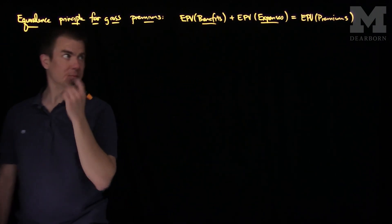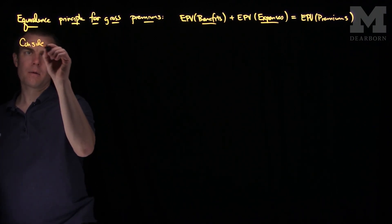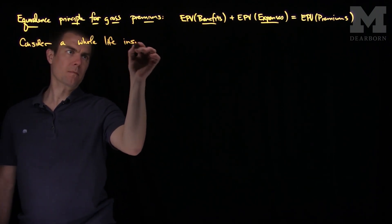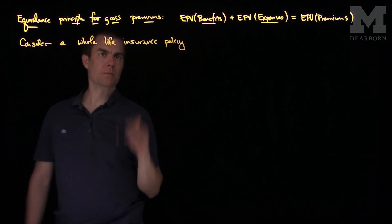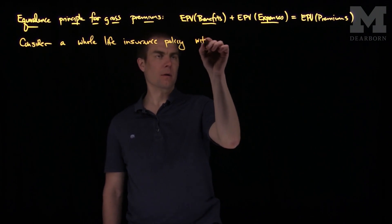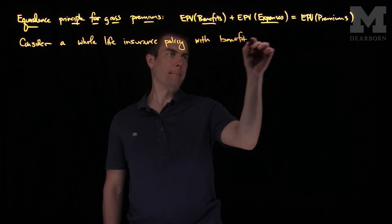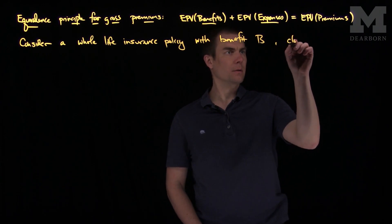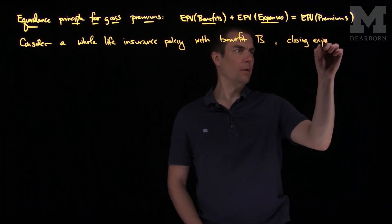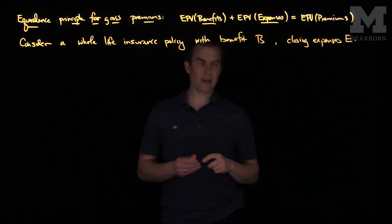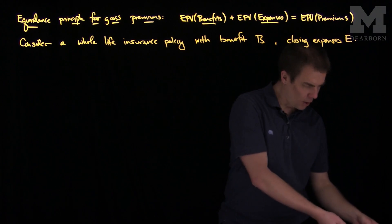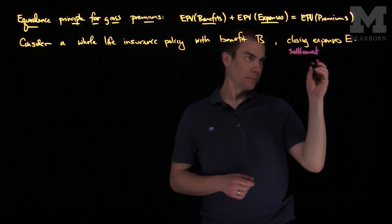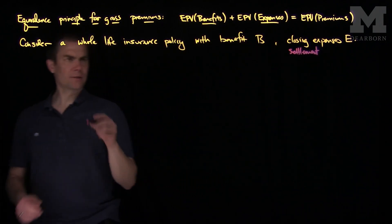Let's consider a whole life policy with benefit B. Let's assume the benefit has settlement expenses E — so the benefit the insurance company pays is B, and they also have settlement expenses E. Let's assume also that there are commissions.